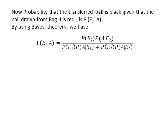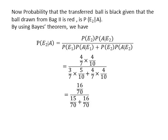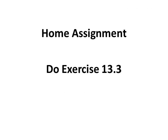The probability that the transferred ball is black, given that the ball drawn from Bag 2 is red, is P(E2|A). Using Bayes' theorem, P(E2|A) equals PE2 multiplied by P(A|E2) divided by PE1 multiplied by P(A|E1) plus PE2 multiplied by P(A|E2). Substituting the values and simplifying, we get P(E2|A) = 16/31. For home assignment, complete exercise 13.3. Thank you.